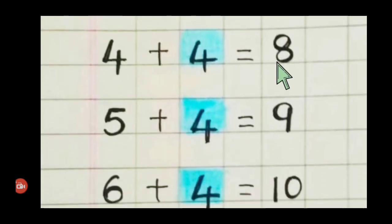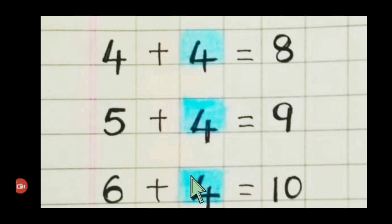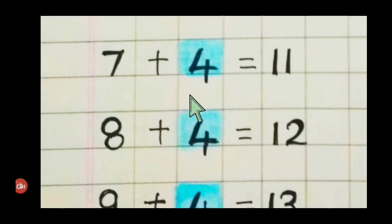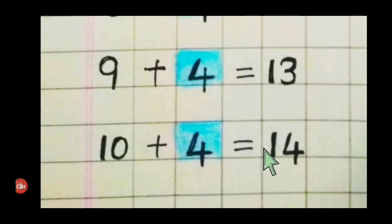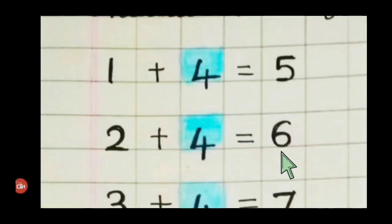Addition table of four. Step one. Four plus four is eight. Five plus four is nine. Six plus four is ten. Seven plus four is eleven. Eight plus four is twelve. Nine plus four is thirteen. Ten plus four is fourteen.